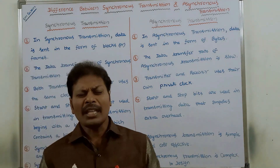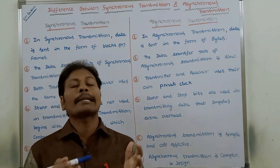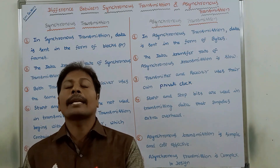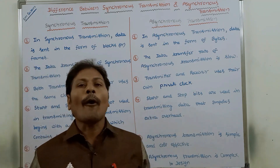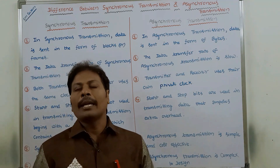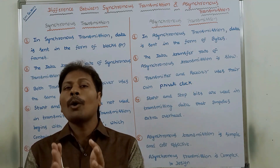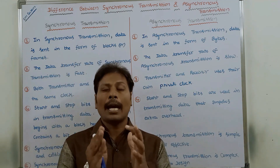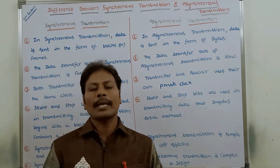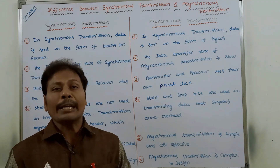Fourth point: in the case of synchronous transmission, start and stop bits are not used while transmitting the data. It consists of only a block header that contains a sequence of data. Whereas in the case of asynchronous transmission, start and stop bits are used. Whatever data we want to send from transmitter to receiver is placed between the start and stop bits, which is an extra overhead in asynchronous transmission.